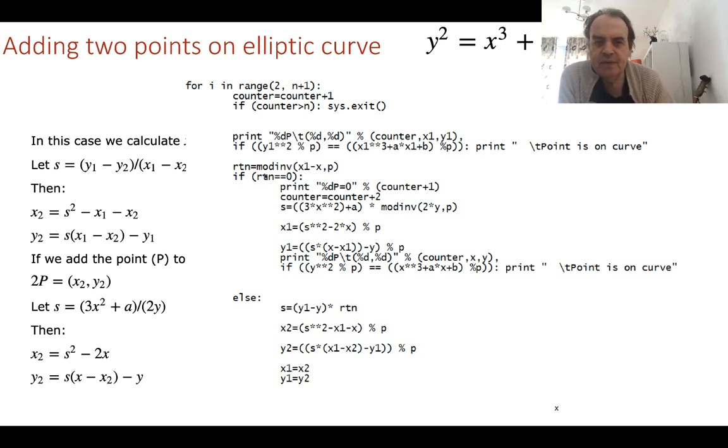In this case, we'll see when this returns a zero, this operation here. When this returns a zero, then we define it as a point at infinity.